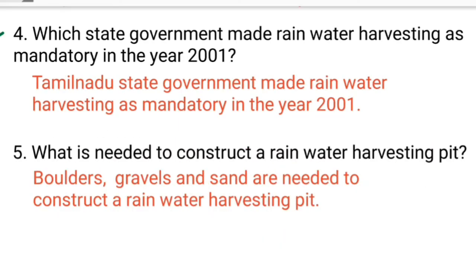Question 4: which state government made rainwater harvesting mandatory in the year 2001? Answer: Tamil Nadu state government made rainwater harvesting mandatory in the year 2001. Question 5: what is needed to construct a rainwater harvesting pit? Answer: boulders, gravels, and sand are needed to construct a rainwater harvesting pit.